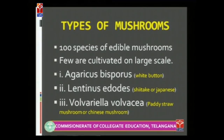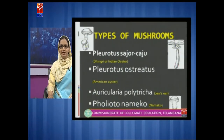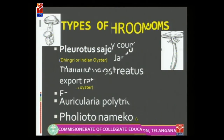Coming to the types of mushrooms — in the world there are many types of mushrooms, but only 100 species are of edible type. Of these 100 species, only a few are cultivated on a large scale. Some examples are: Agaricus bisporus, commonly known as white button mushroom; Lentinus edodes, the Shiitake or Japanese mushroom; Volvariella volvaceae, commonly known as paddy straw mushroom or Chinese mushroom; Pleurotus sajur kaju, commonly known as Dingri or Indian oyster mushroom; Pleurotus ostreatus, the American oyster mushroom; Auricularia polytricha, the jelly ear mushroom; and Foliota namico, commonly known as Namico mushroom.